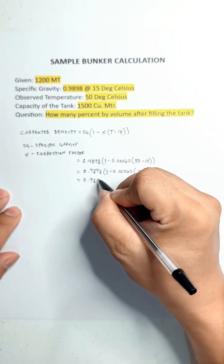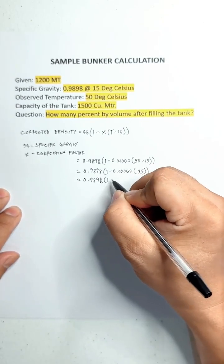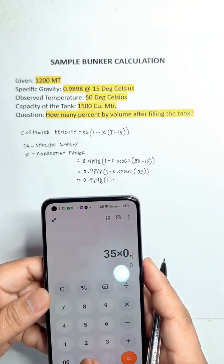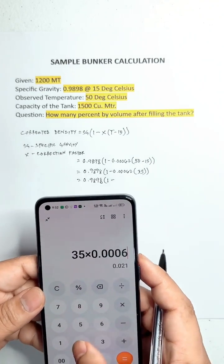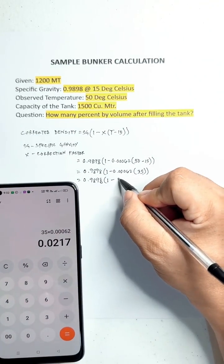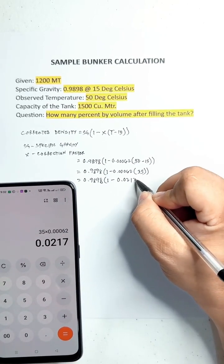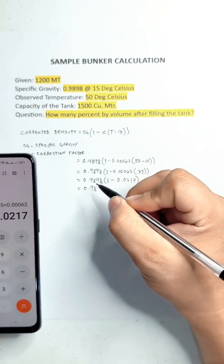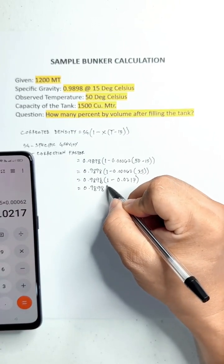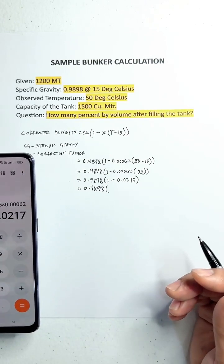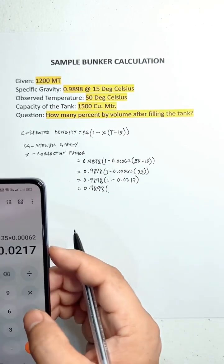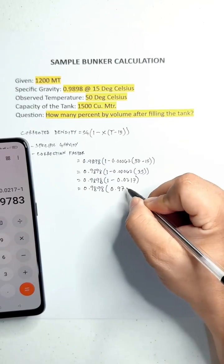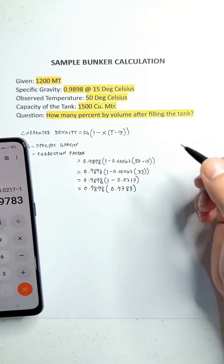0.9898 times 1 minus 35 times 0.00062 equals 0.0217. Then 0.9898 times 1 minus 0.0217 equals 0.9783.